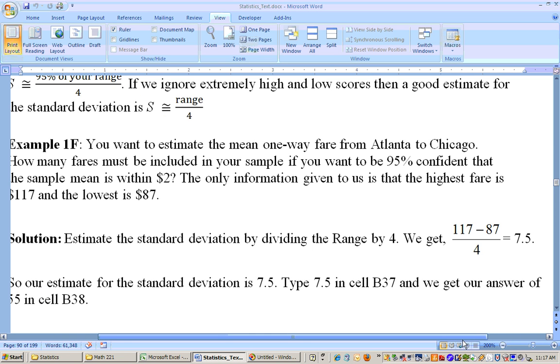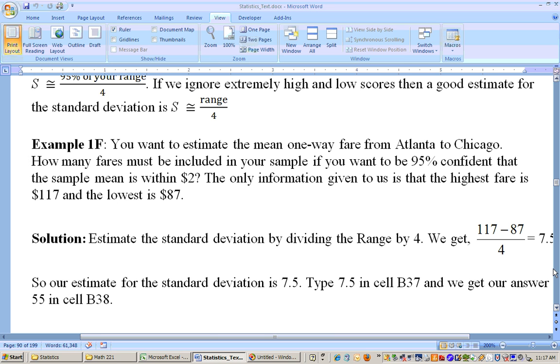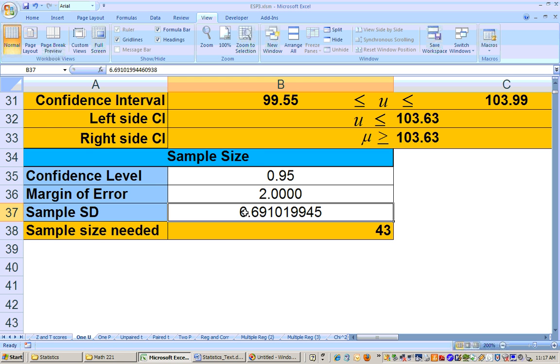Now, if we wanted to see how many people would we need to sample, we have an estimate for a standard deviation that we could put in. So right here, we would just put in 7.5, and that gives me approximately 55 air flights that I would need to sample. And that would be the answer to that problem if we didn't have a previous assessment.